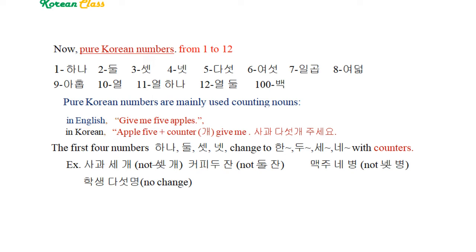Pure Korean numbers: 넷 (4), 다섯 (5), 여섯 (6), 일곱 (7), 여덟 (8). Just say 여덟. In case a silent consonant follows, it gives that ㅂ sound to that consonant — for example, 여덟은. But by itself: 여덟. 9 is 아홉, 10 is 열, 11 is 열하나, 12 is 열둘. And 100 is 백, same as the Sino-Korean number.